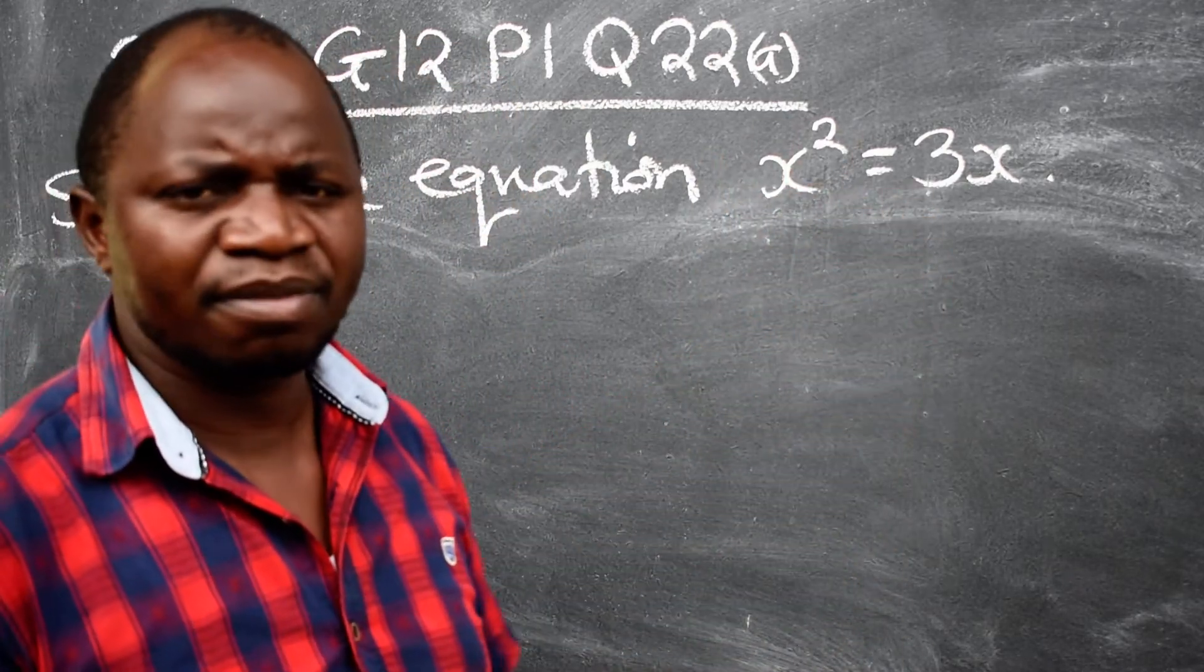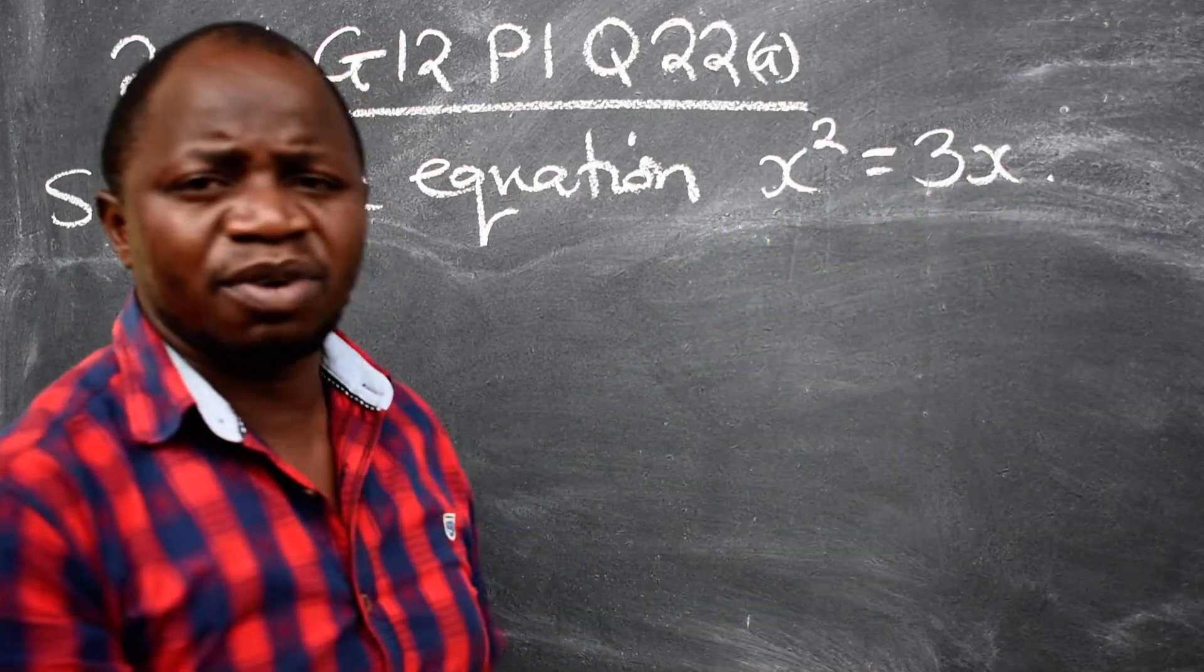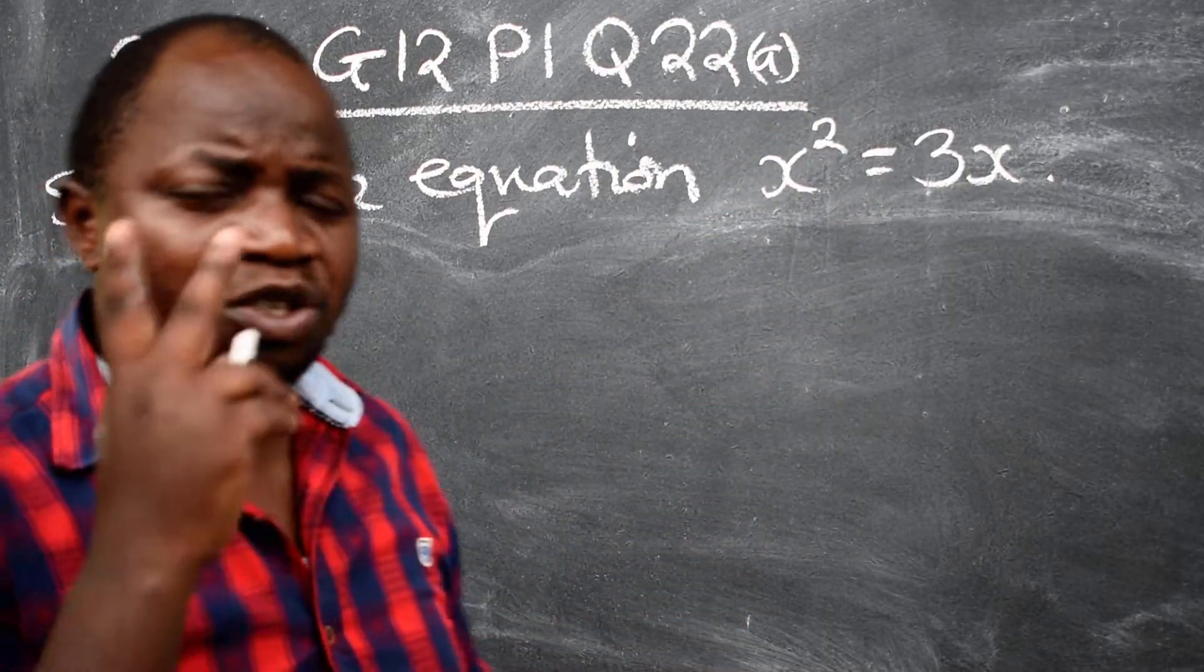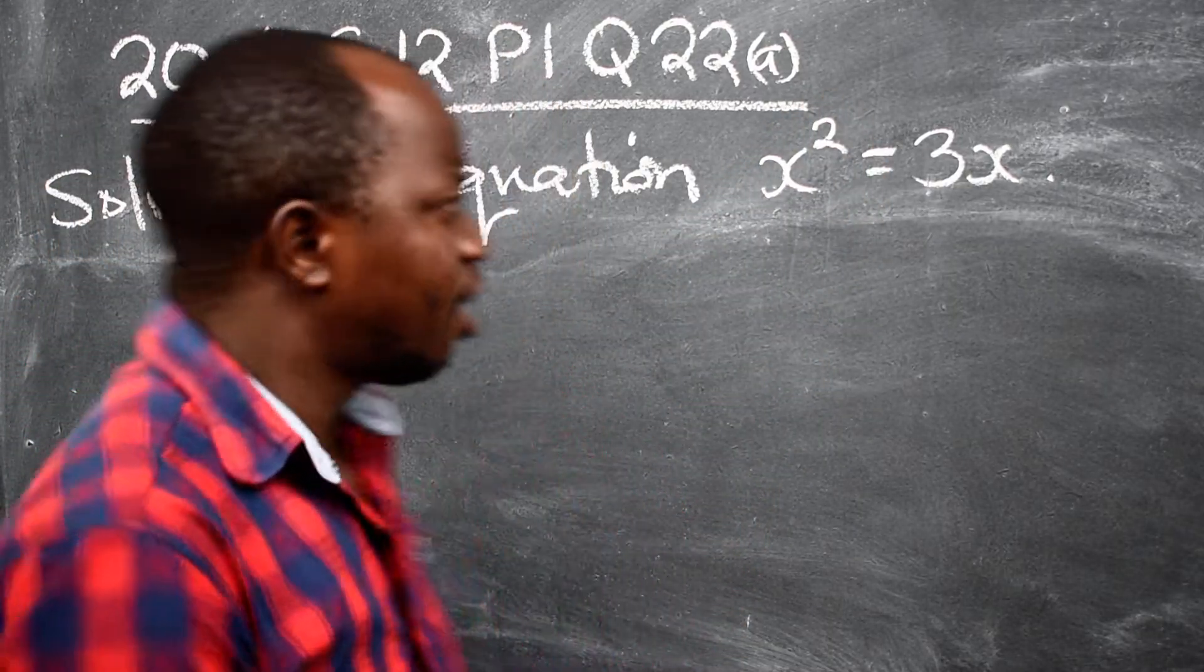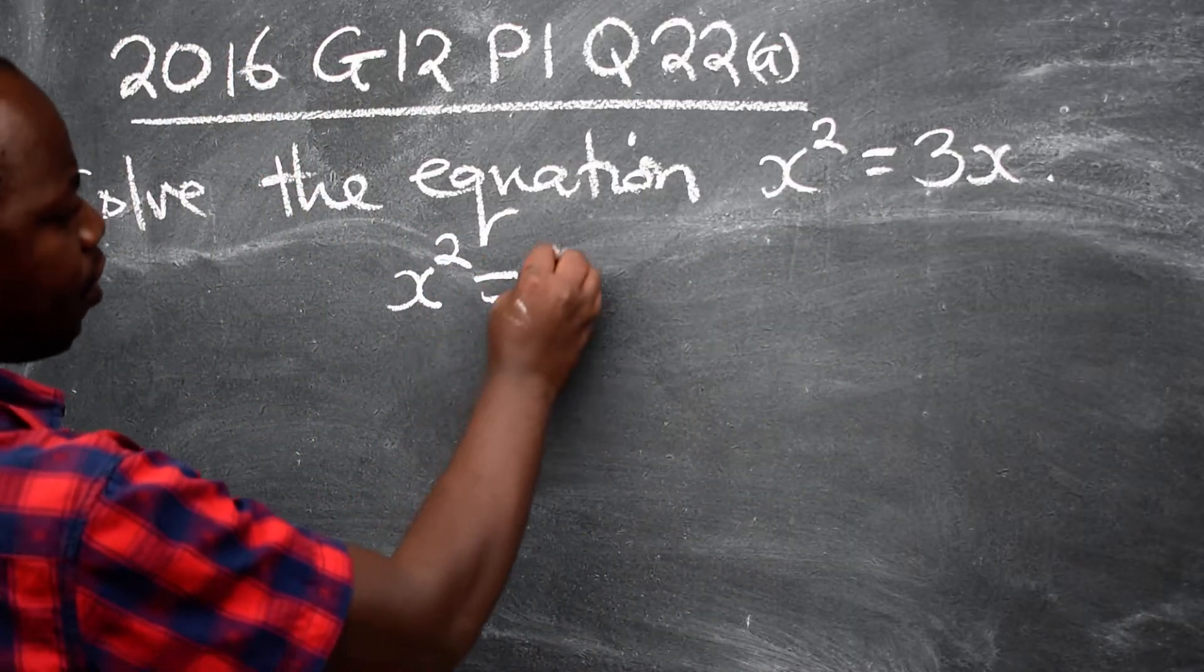Look at this. This is a quadratic equation, alright. This is a quadratic equation, it is raised by power 2. So we are expecting two values of x. So you copy the equation now, it is x² = 3x.